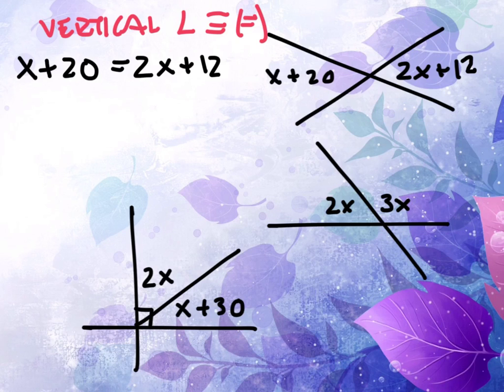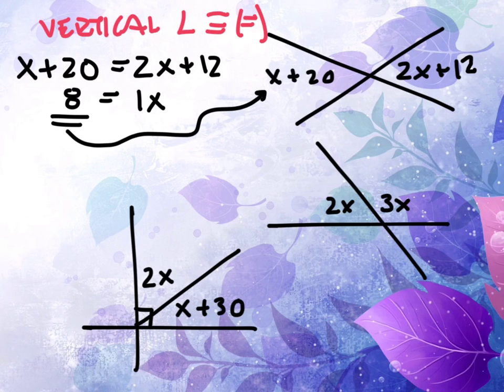So we can go ahead and just say that. And then we would solve, so we would get 1x over here equals 8. And then oftentimes they'll ask for x but they'll also sometimes ask for the angles. So if you substitute that back in, you find out that each of those angles has to be 28 in size.